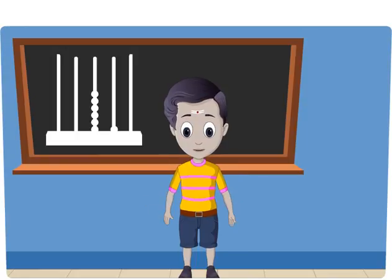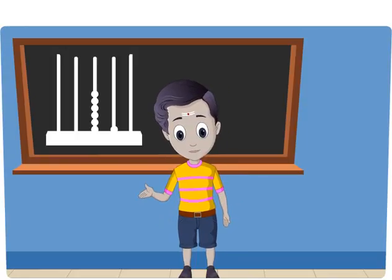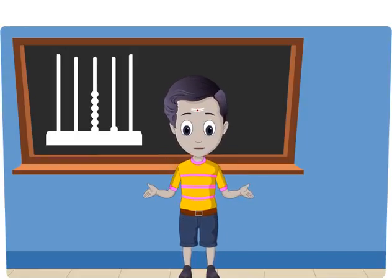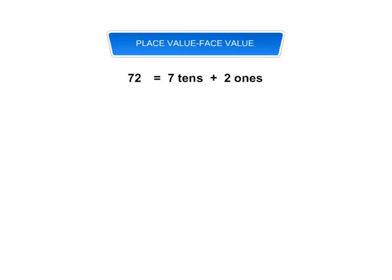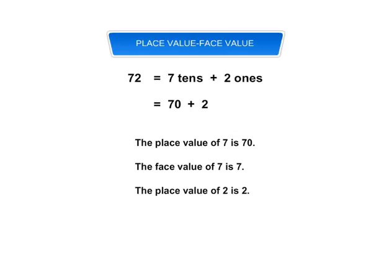Let us understand what is meant by place value and face value. Take the number 72. In 72, the digit 7 is at the tens place, so the place value of 7 is 70, and the face value of 7 is 7. The digit 2 is at the ones place, so the place value of 2 is 2, and the face value of 2 is also 2.